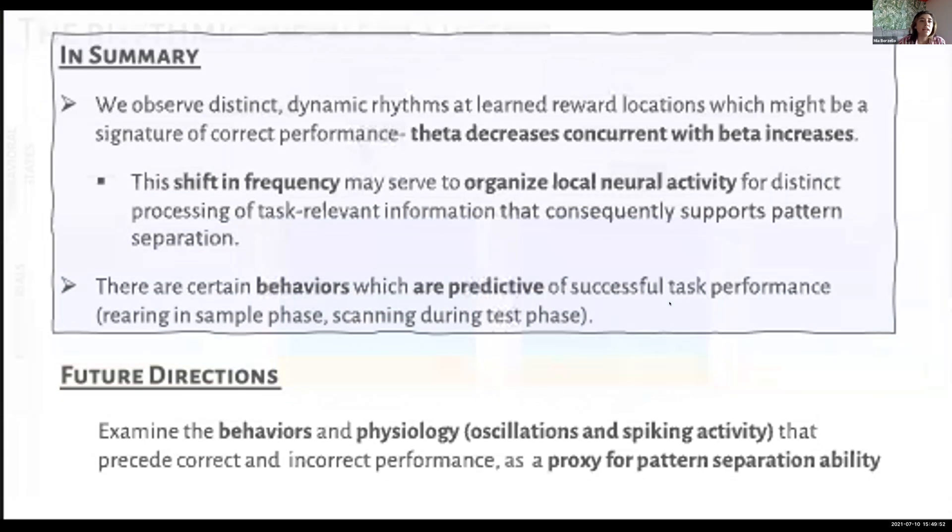To summarize, we observed distinct dynamic rhythms at this learned reward location, which might be a signature of correct performance. This is theta decreased with concurrent beta increases. We think that this shift in frequency may serve to organize local neural activity for distinct processing of task-relevant information that supports pattern separation.